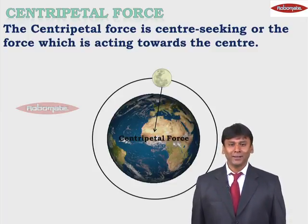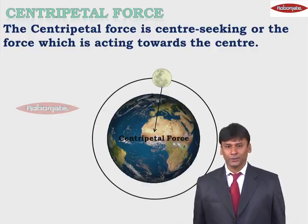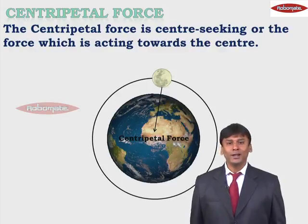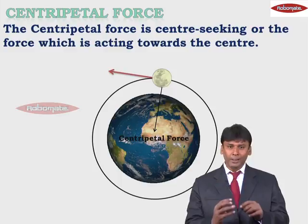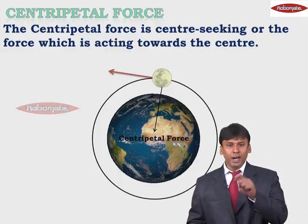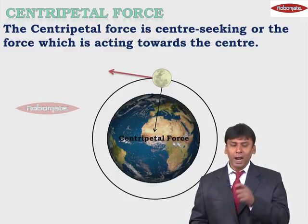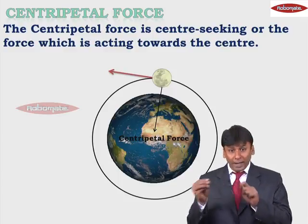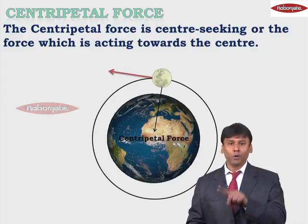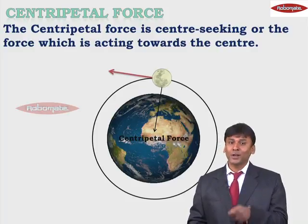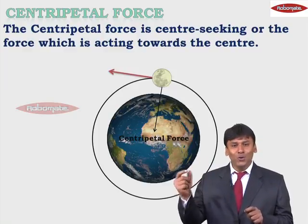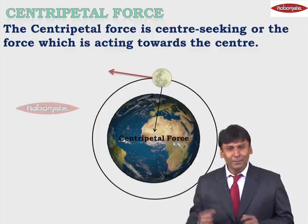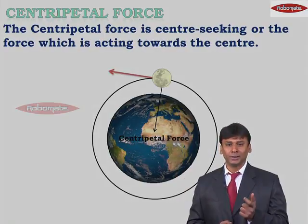Now, what would happen if the centripetal force ceased to exist — if it stopped? Then the moon would move in a straight line, tangential to the circular orbit. For example, if I take a stone, tie it to a string, and rotate that stone — at one particular point, if the string breaks, the stone will not continue to rotate. It will go tangential from that point. Similarly, the moon is revolving round the earth in the same way.